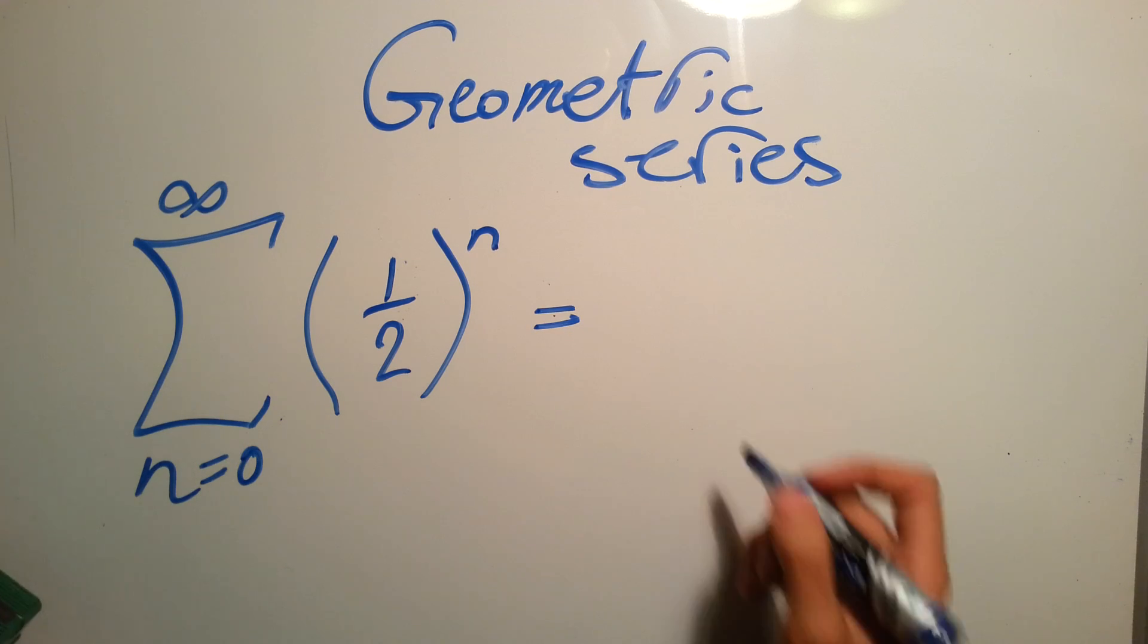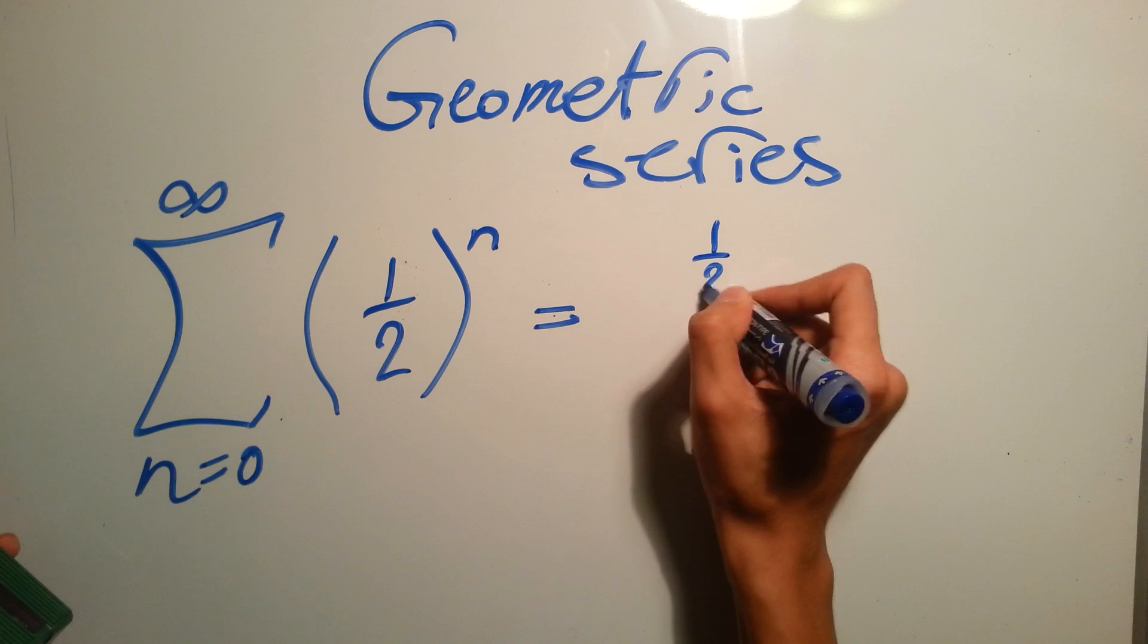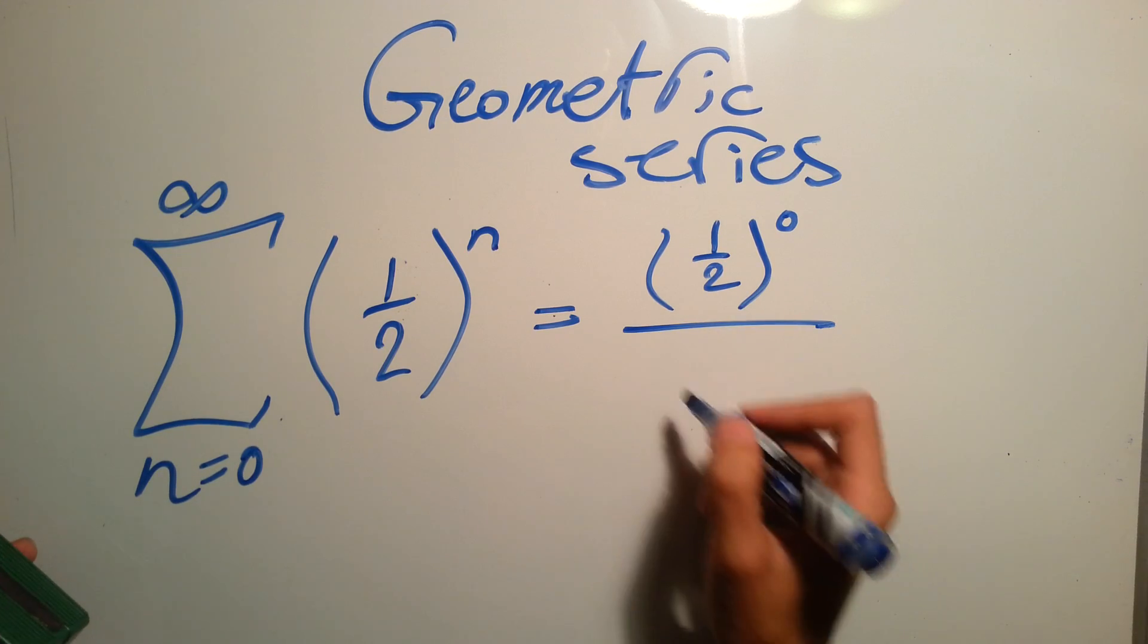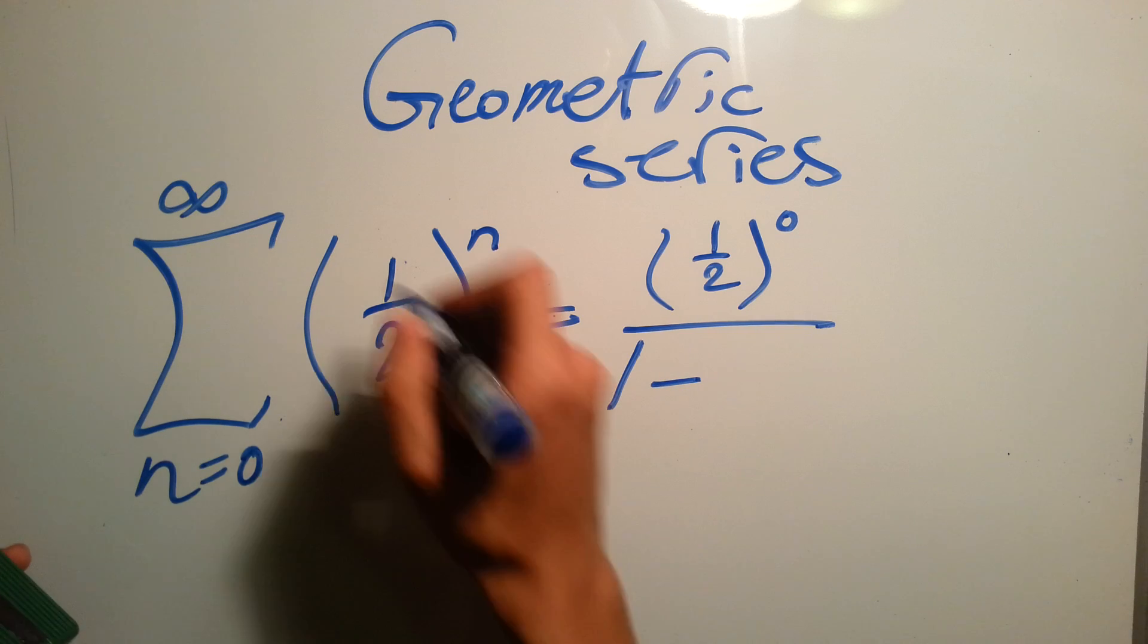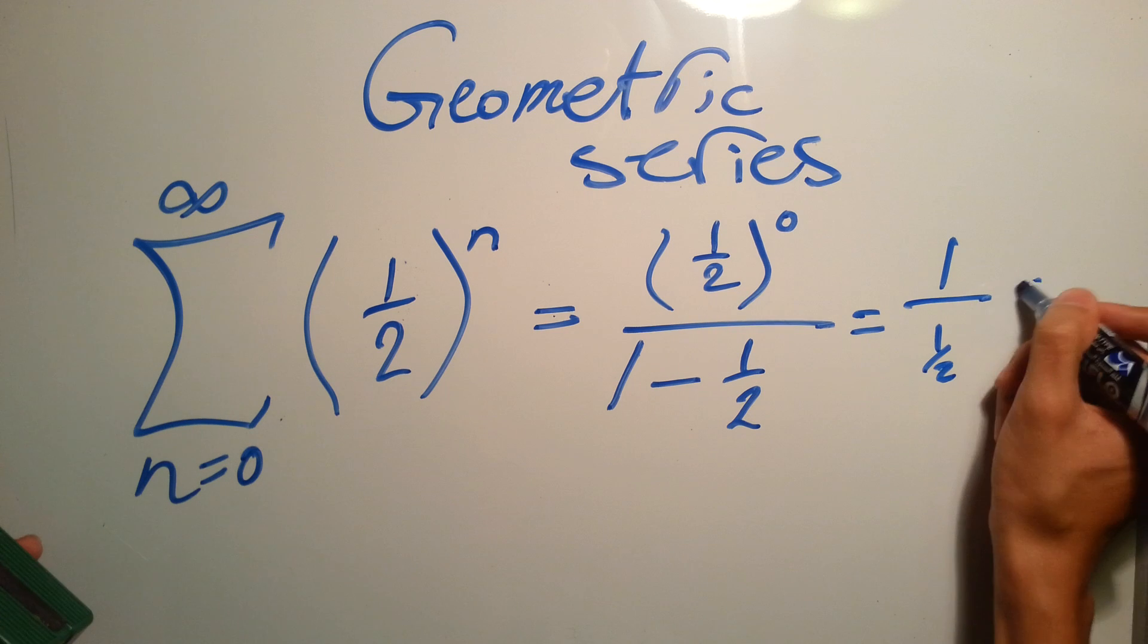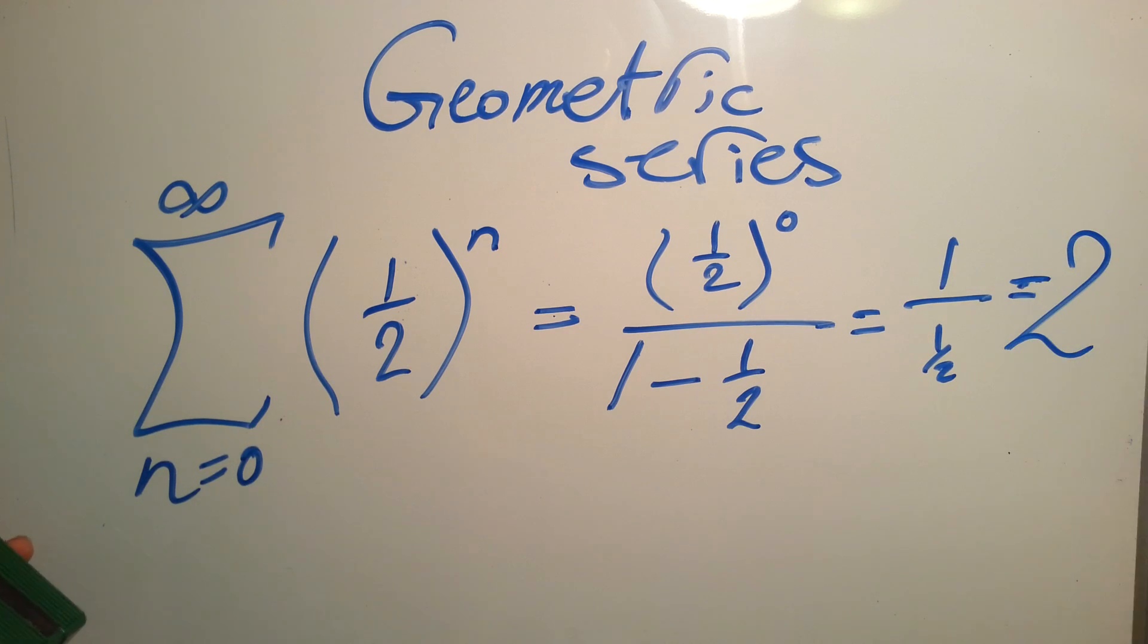So the solution must be r^k, which is (1/2)^k, which is (1/2)^0, over (1 - r). r in this case is 1/2. So this one will equal 1/(1/2), which equals two.